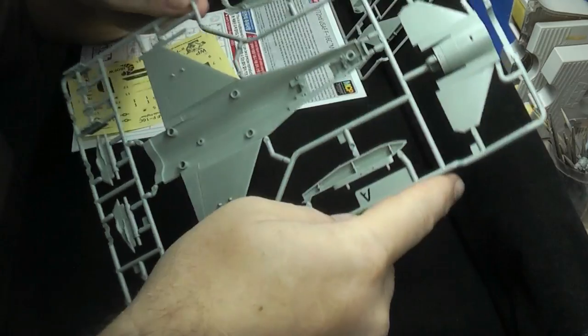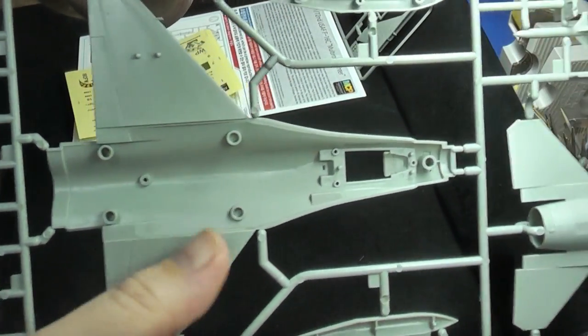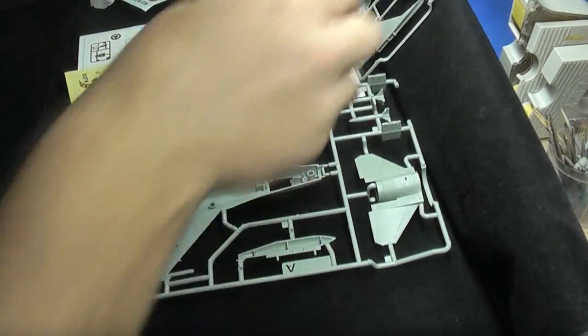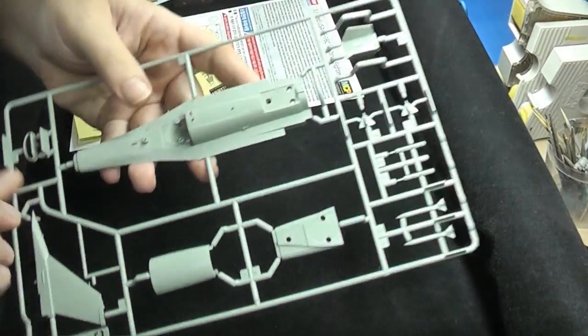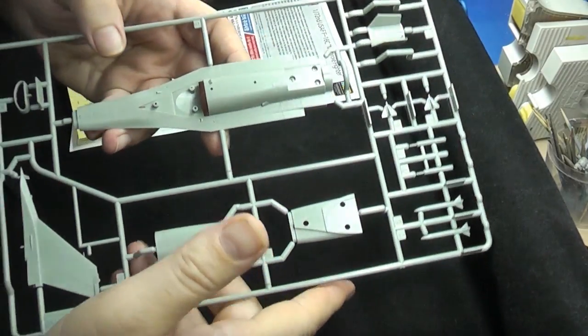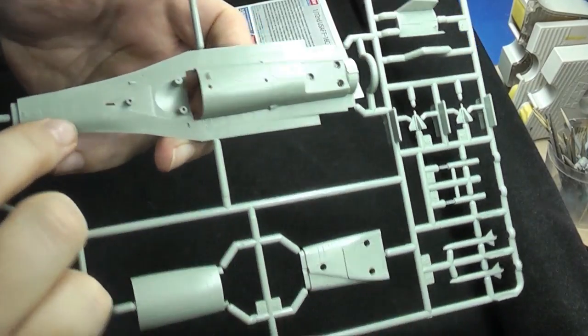So yeah, basically, it's a snapped together kit. See, there's the parts for snapping it together. So that's the top, here's the bottom. So there's the bottom of the kit. Again, beautiful recessed panel lines there, no problem at all.